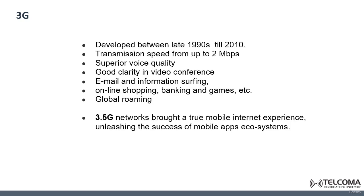For 3G, it was developed between the late 1990s and 2010. The transmission speed was increased until it reached 2 megabits per second. 3G offered superior voice quality and good clarity in video conferencing. It also offered new services like emailing, information services, online shopping, banking, and gaming, and of course it allowed global roaming. Then we have the 3.5G networks, which offered high data rates and allowed a true mobile internet experience. The 3G and 3.5G were the reason for the boom in the mobile applications ecosystem.